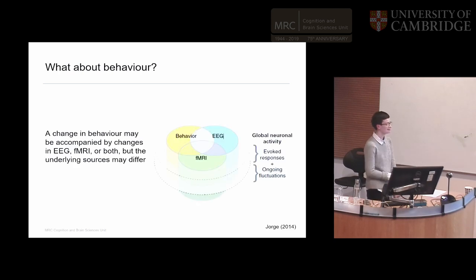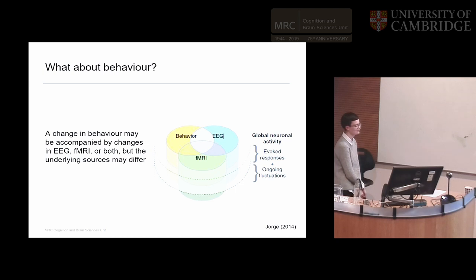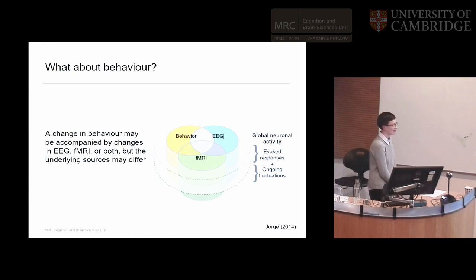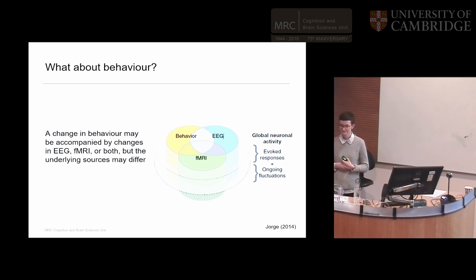Just the final thing to consider: EEG and fMRI are different windows onto the neural activity and the behavior we're interested in. They might overlap in some cases and might not in others. We also need to think about how they overlap with behavior, which is what we're really interested in overall. Thank you.